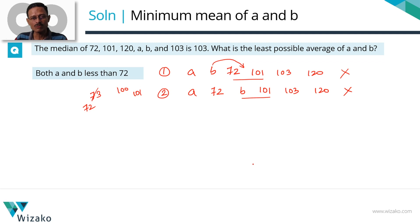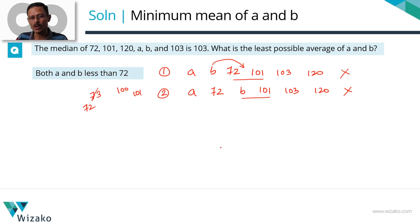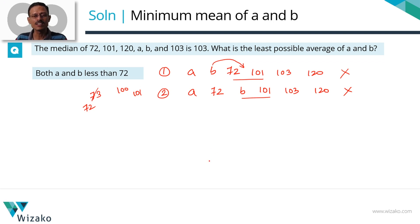The key learning here: when reading any question, check whether the numbers are stated to be distinct. If they are not, do not assume they are distinct. This is an unwarranted and incorrect assumption to make.